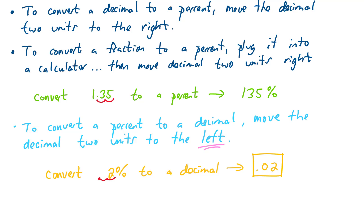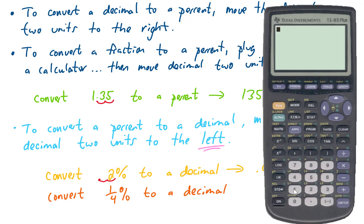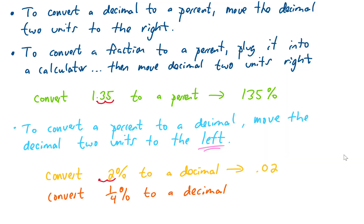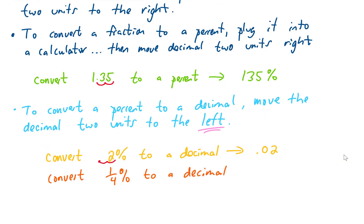Sometimes you hear people mixing fractions and percents. For example, maybe the stock market went up a quarter of a percent. That quarter of a percent is written as one-fourth of a percent. To convert that into a decimal, we type one-fourth into the calculator and get 0.25, so one quarter of a percent is 0.25%. Then to convert that into a decimal, we move the decimal place two units to the left, giving us 0.0025.